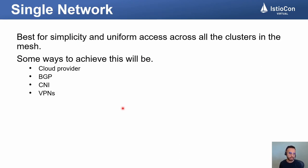Single network is best for simplicity and uniform access across different clusters. Some of the ways we can achieve a single network include using a cloud provider Kubernetes distribution, since some cloud providers already provide a flat network by default. If we are bringing our own Kubernetes to the cloud or have on-premise deployments, the best way will be to use a routing protocol like BGP to create a flat network and then deploy Istio on top of that. Other ways to achieve this include CNIs — for example, Cilium offers Cilium cluster mesh — or VPN technologies like WireGuard to make a flat network.